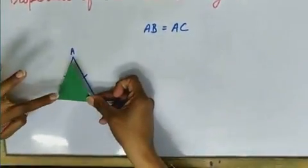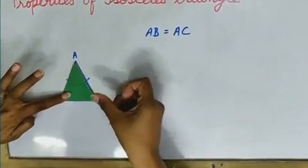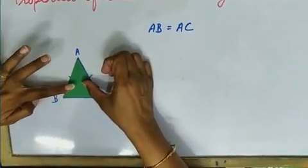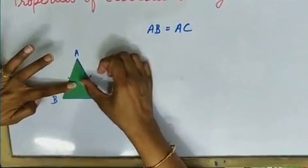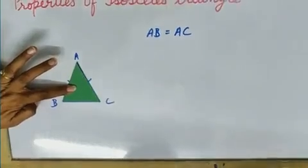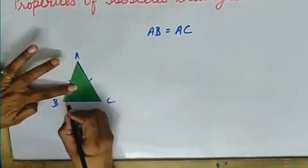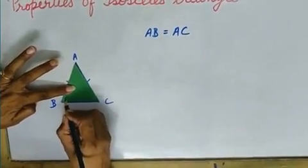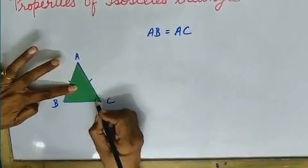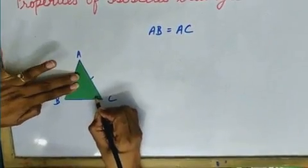When we are keeping the replica on triangle, you can see it covers triangle ABC. It means this is angle B and this is angle C.